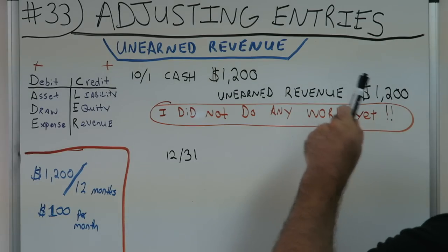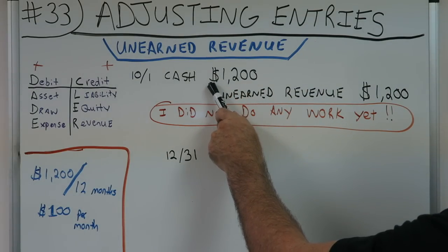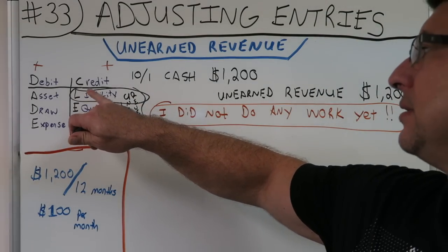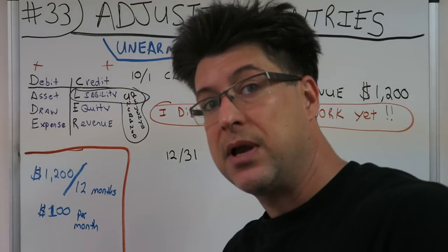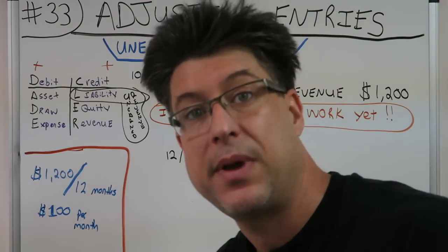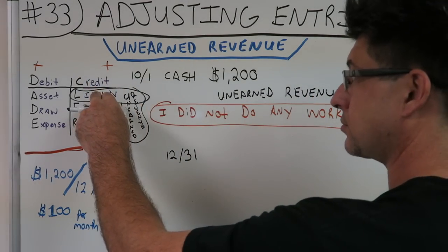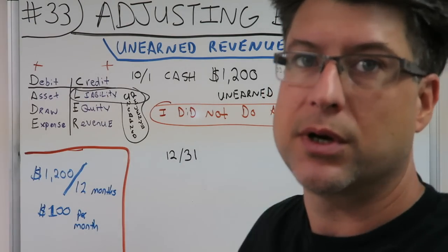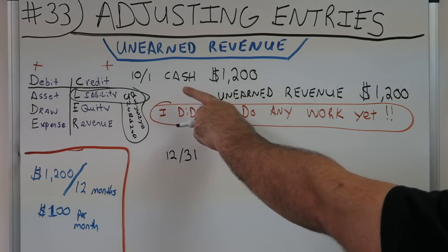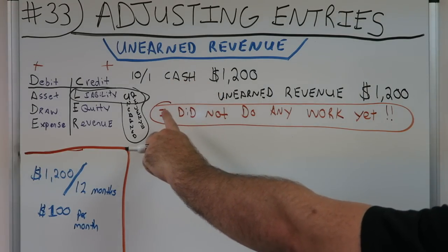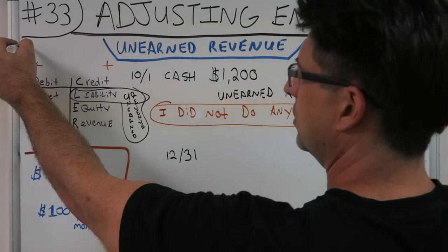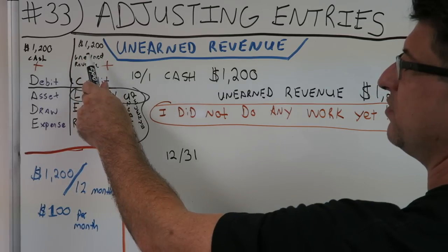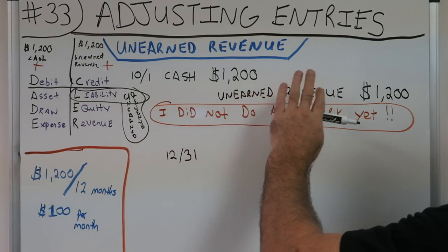Cash debit $1,200, unearned revenue credit $1,200. Unearned revenue is a liability — like accounts payable, wages payable, taxes payable — because you owe somebody work. You're liable for work. That's our journal entry when we received this money. On the books: Cash $1,200, Unearned Revenue $1,200.